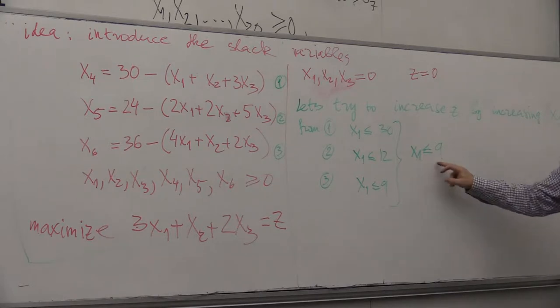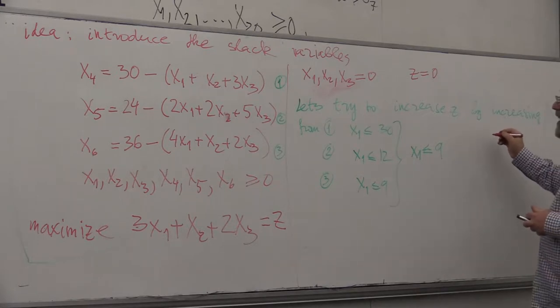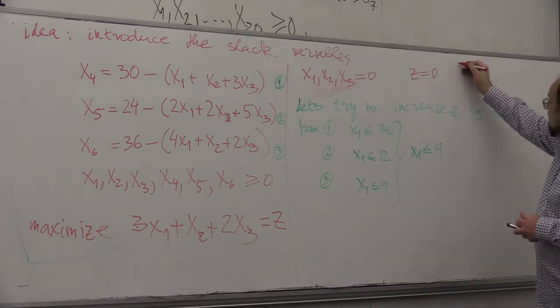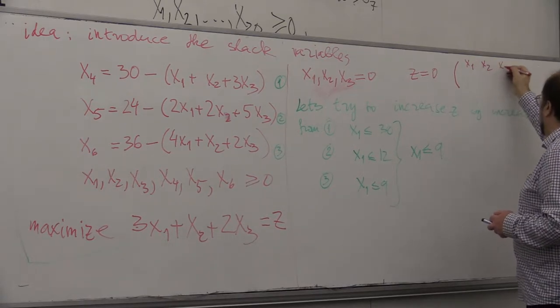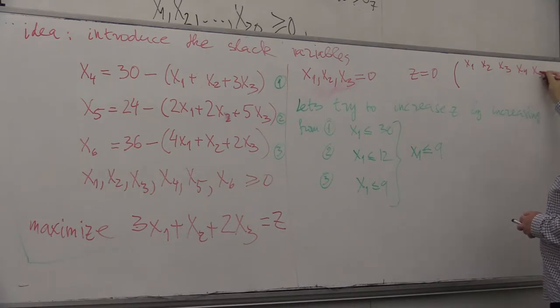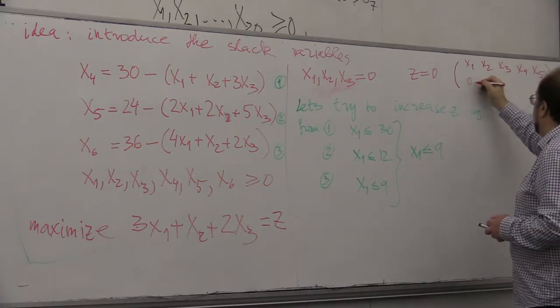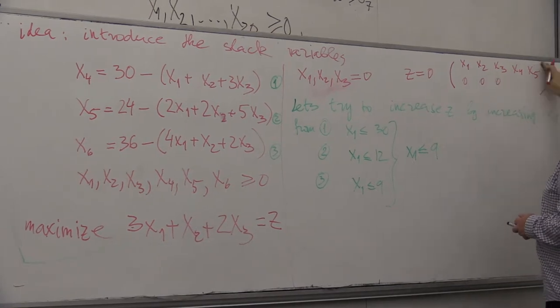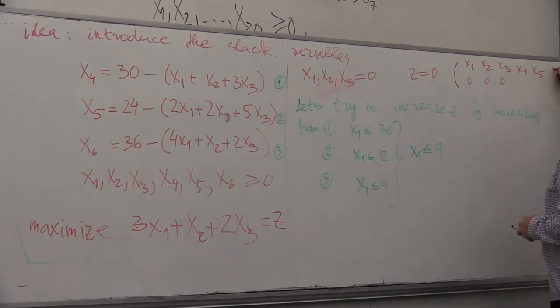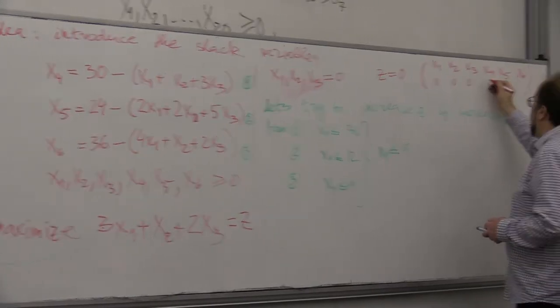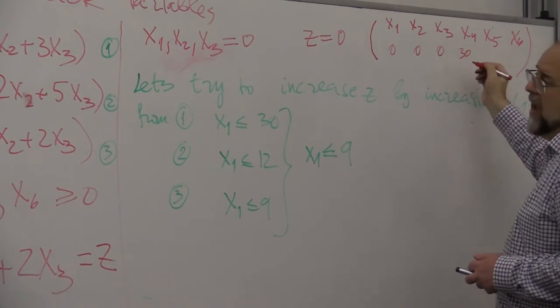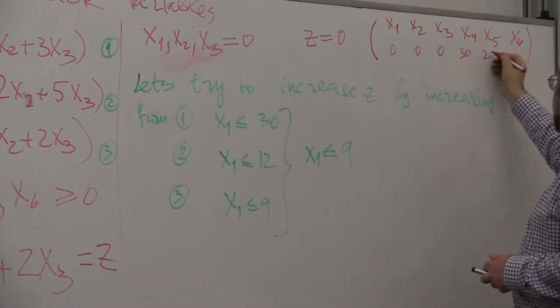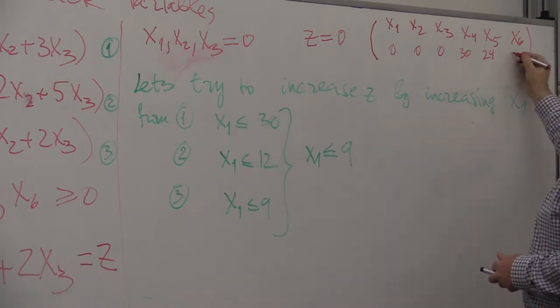I push x1 all the way to 9. And so in the initial case, initial assignment, I had x1, x2, x3, x4, x5. And initially, we had the first three variables equal to 0, and x6 also. Then x4 was 30, x5 was 24, and x6 was 36.